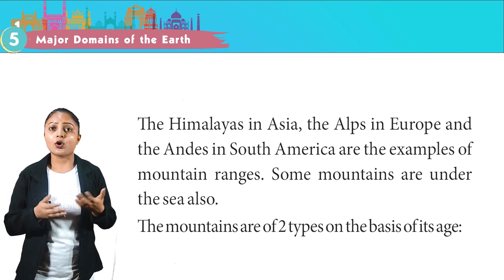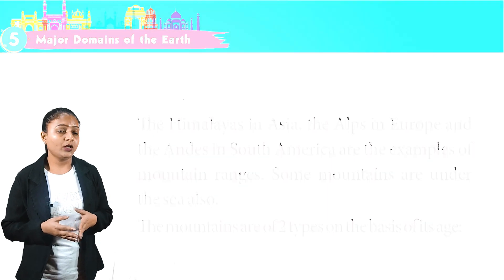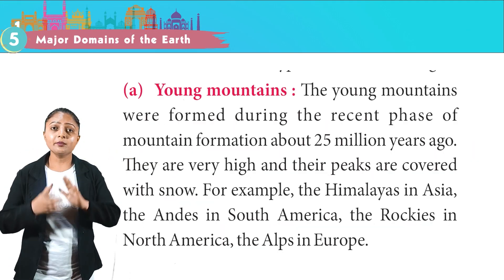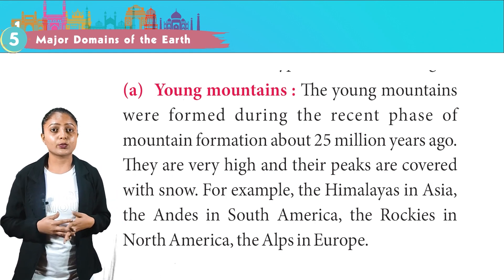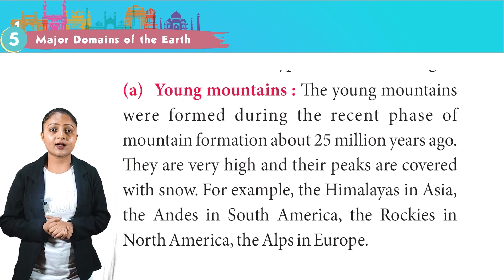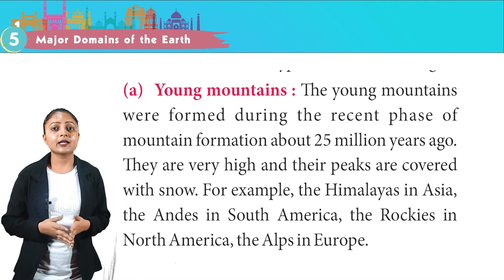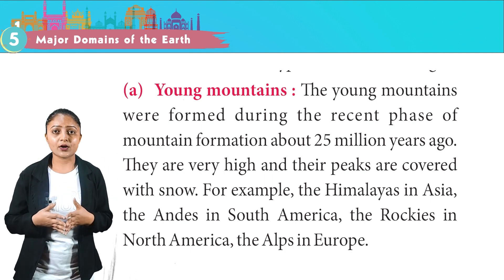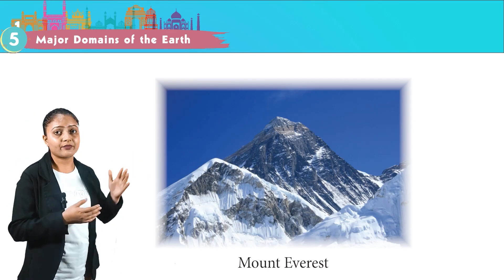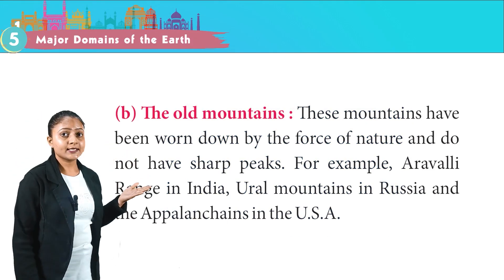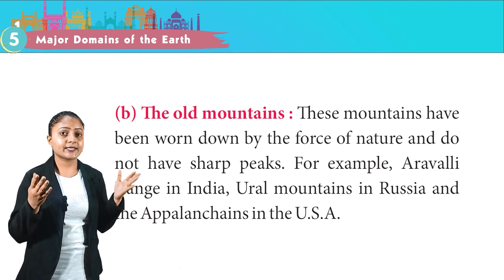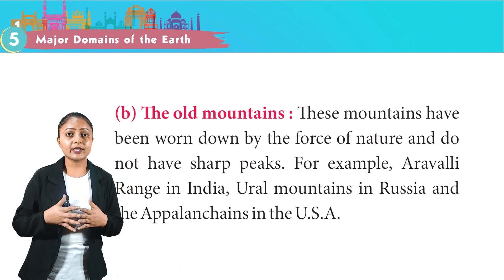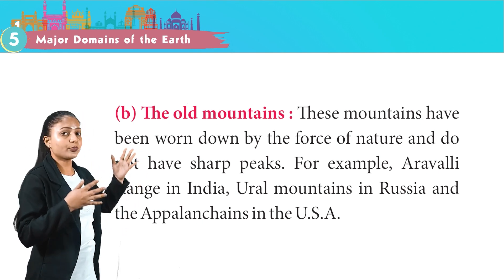Mountains are of two types on the basis of their stage. Young Mountains were formed during the recent phase of mountain formation about 25 million years ago. They are very high and their peaks are covered with snow. Examples include the Himalayas in Asia, the Andes in South America, the Rockies in North America and the Alps in Europe. Old Mountains have been worn down by the forces of nature and do not have sharp peaks. Examples include the Aravalli Range in India, the Ural Mountains in Russia and the Appalachians in the USA.